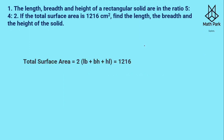The length, breadth, and height of the rectangular solid are in the ratio 5:4:2. So let us take the length as 5x, breadth as 4x, and the height as 2x. The total surface area formula is 2(lb + bh + hl), and the total surface area is given as 1216 cm². We are asked to find the length, breadth, and height.